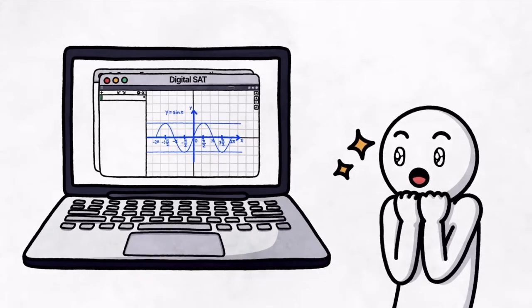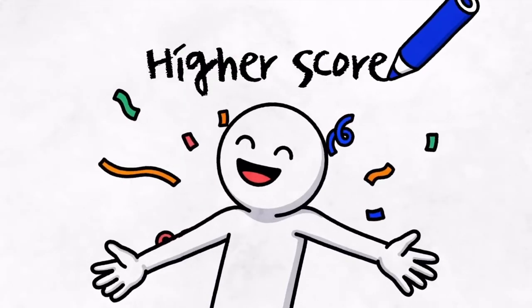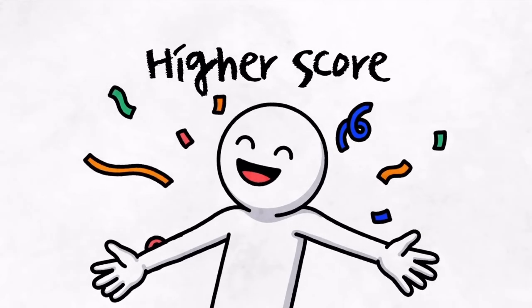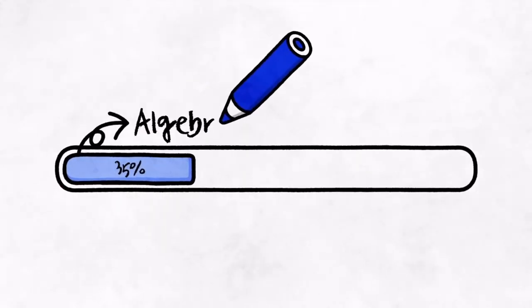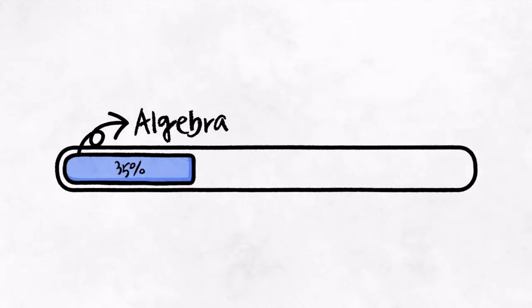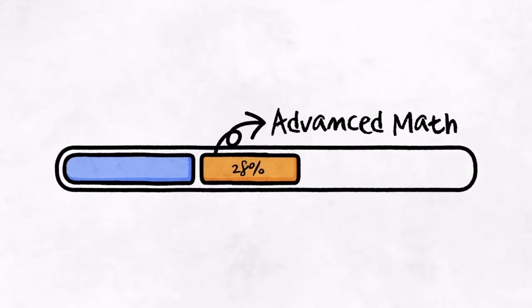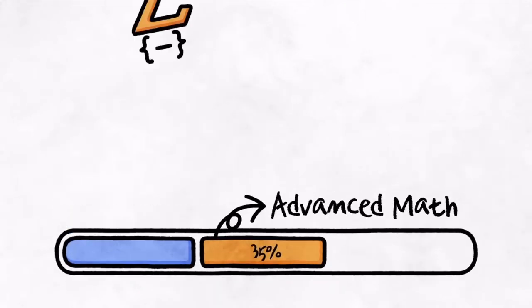Although sporting different names, the domains for digital SAT math haven't changed much. Algebra is up to 35% of the total math section as compared to 33% on the paper test. The portion of advanced math is 35% of the section, up from 28%. Both algebra and advanced math sections cover more or less the same concepts as before.